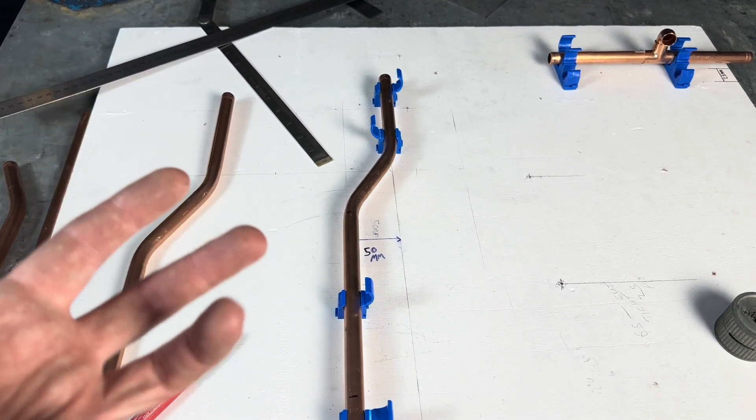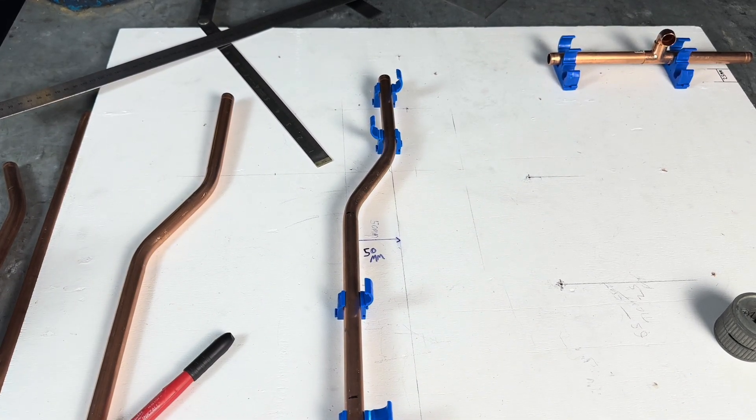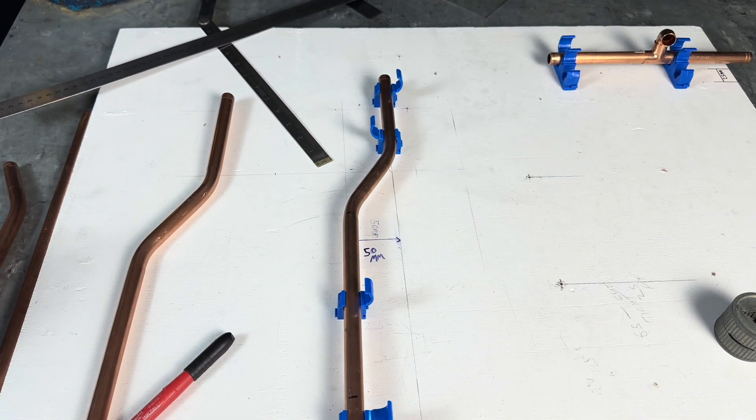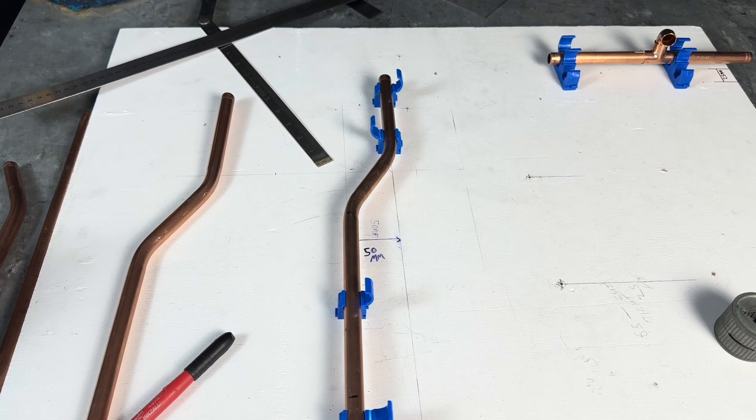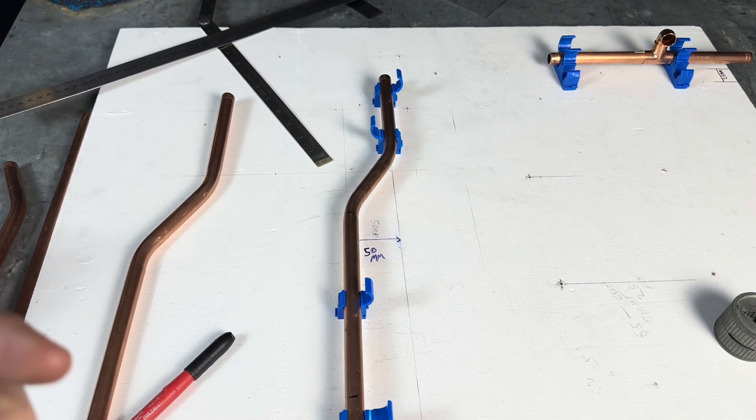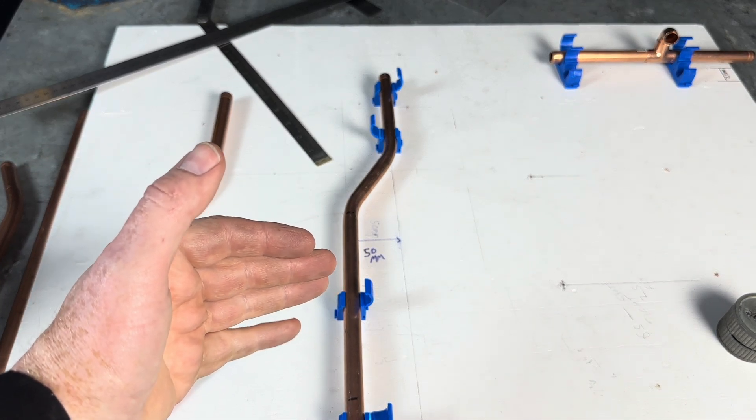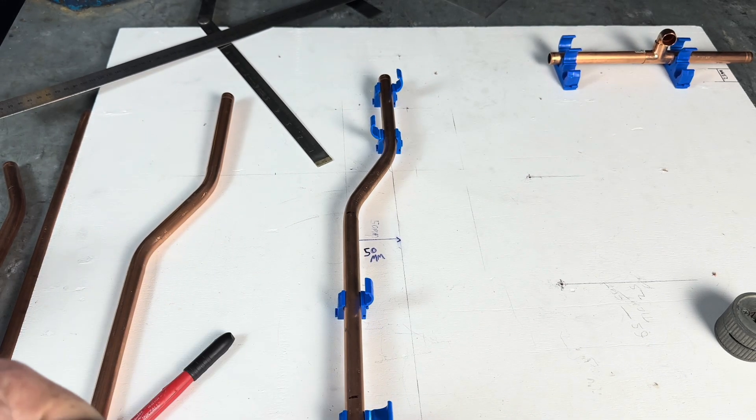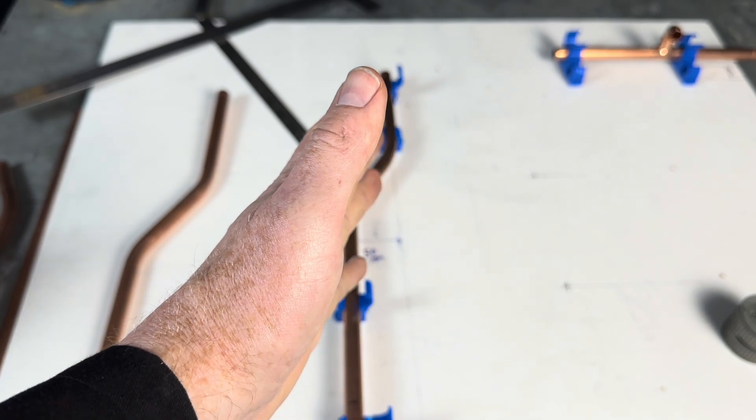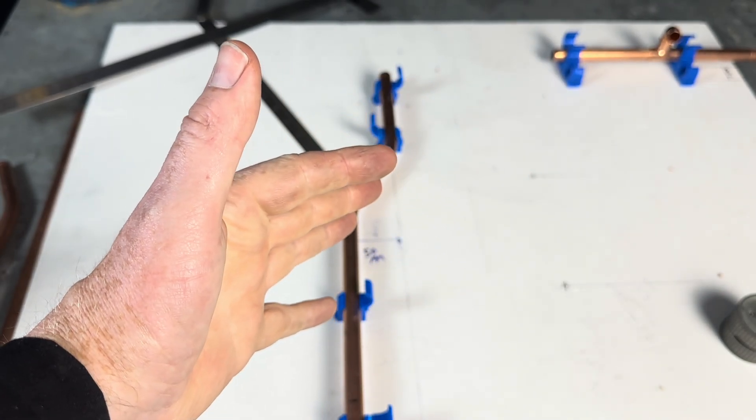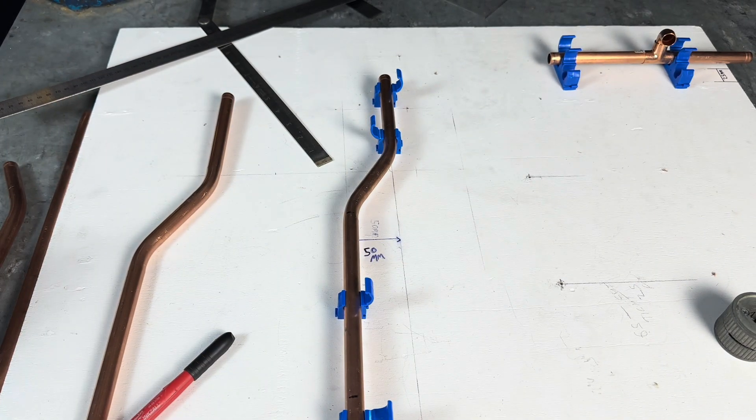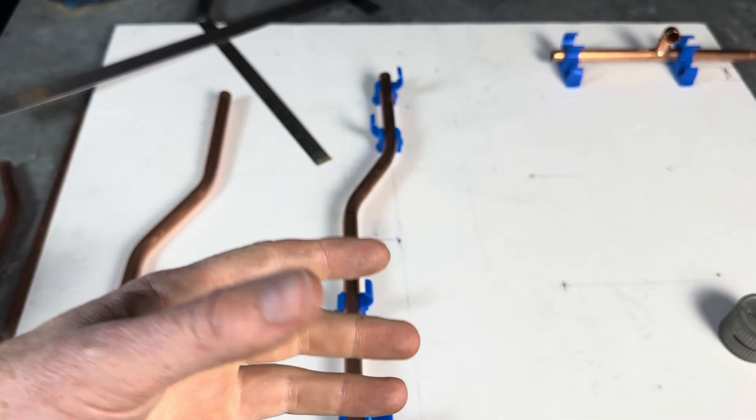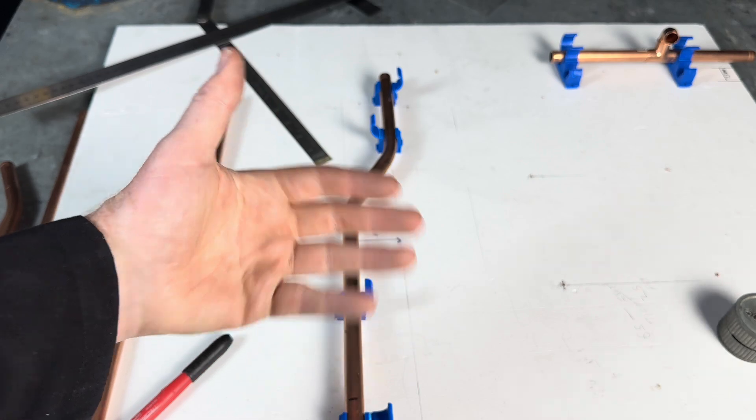If you remember earlier, we said it's best to do the steepest bend possible. So looking at the charts, a 30 degree bend is the steepest bend possible to achieve a 50 mm offset. Right, but you could also bend it less than 30 degrees. So let's show you what it would look like when you bend it, say 15 degrees, and I'll show you why it's always best to bend it as steep as possible.